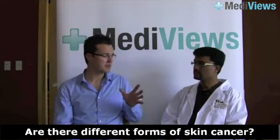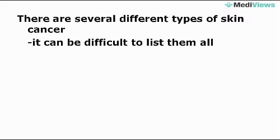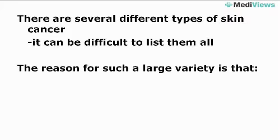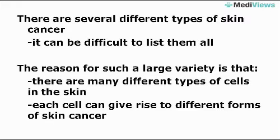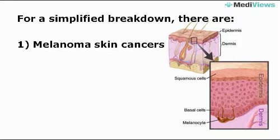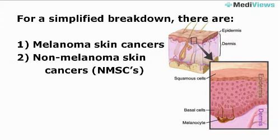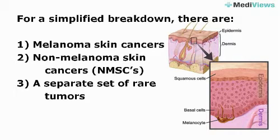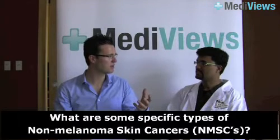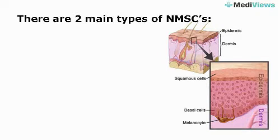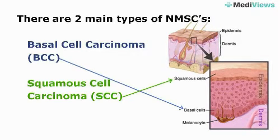Are there different forms of skin cancer? There are actually several different types. If you listed every tumor type, there are many. The thing is, there are different types of cells in the skin, and each cell can give rise to different types of skin cancer. One simple way of putting it: you have melanoma skin cancers, non-melanoma skin cancers, and then there's a grab bag of other rare tumors. The two main types of non-melanoma skin cancers would be basal cell carcinoma as well as squamous cell carcinoma.